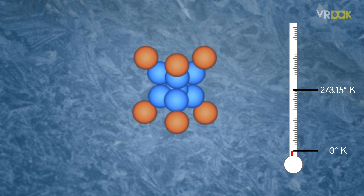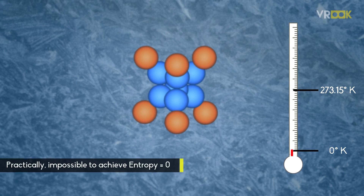In actuality, there is no substance in which all the molecules are identical and the movements of the molecules are perfectly uniform. Hence in practical cases, at absolute zero the entropy is not zero — its value is above zero.